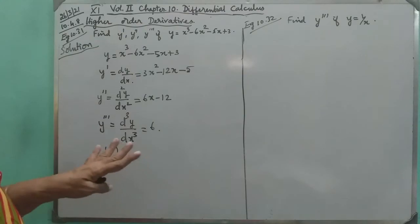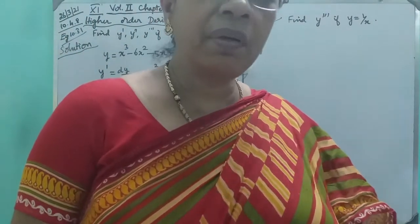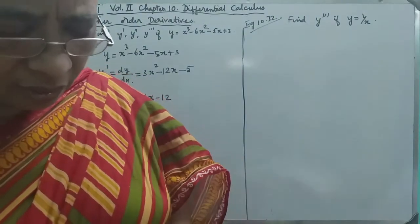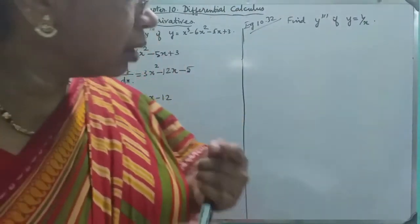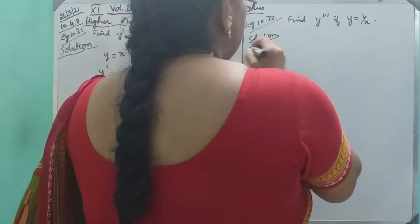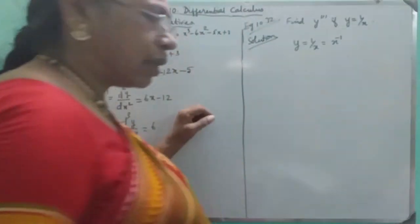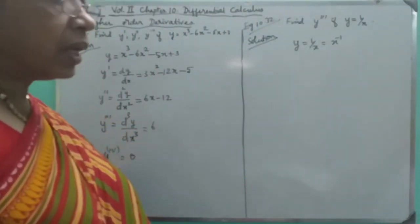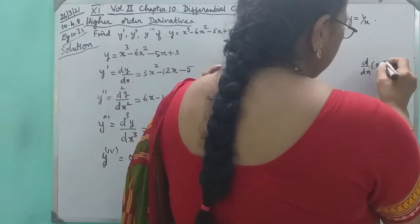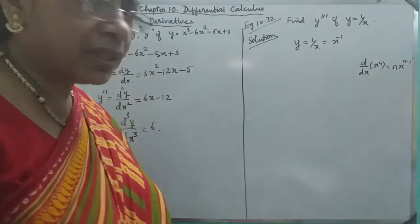So the power of the function is 3, so we can differentiate only 3 times. The fourth time it is zero. So, this is y equal to 1 by x. Now, y equal to 1 by x — we differentiate it 3 times. We can say that x is the function of 1 by x.